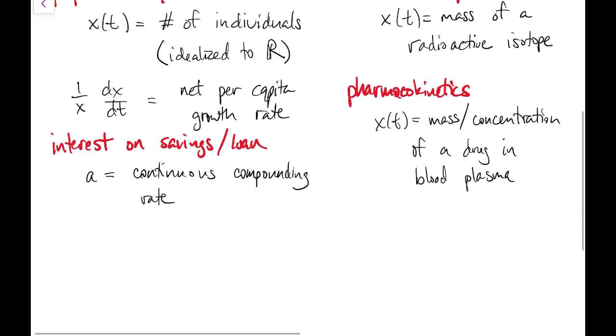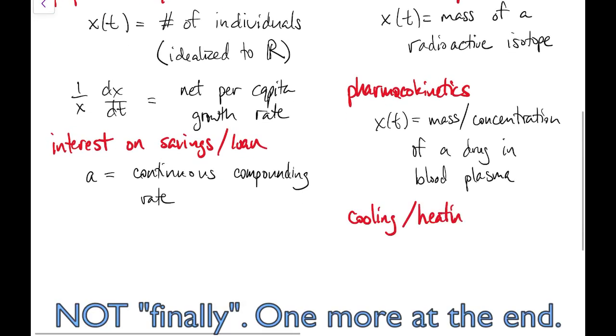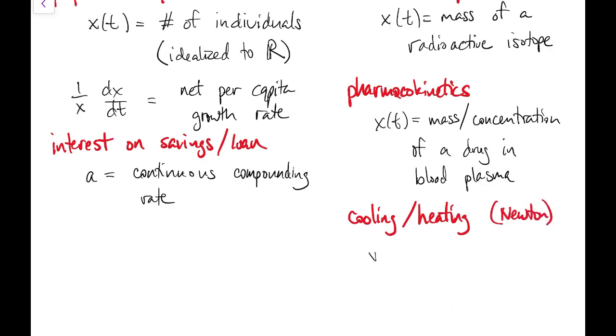And finally, on the decay side, we have cooling or heating problems. This usually goes with the name Newton. In this case, x would be the temperature of an object.